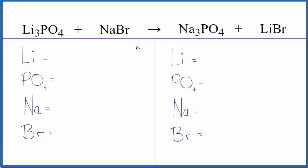Let's start with the type of reaction. We have lithium and sodium just pretty much changing places. The lithium starts with the phosphate but ends up with the bromide. The sodium starts with the bromide but now is with the phosphate. That's a double displacement reaction.